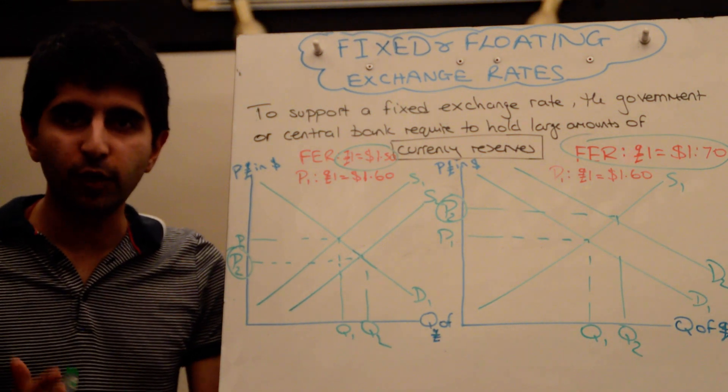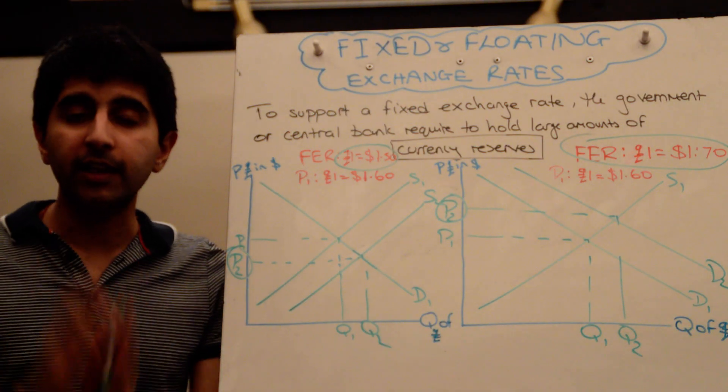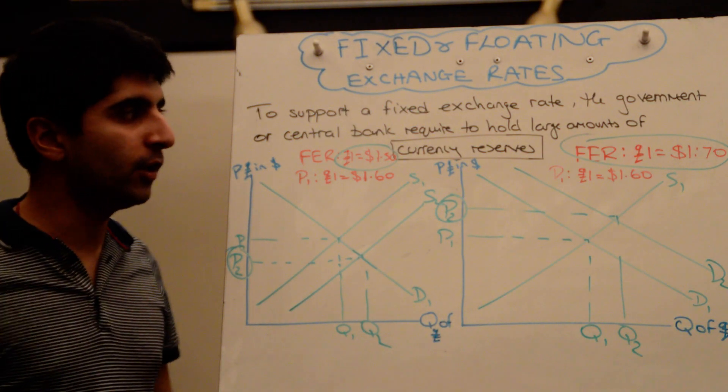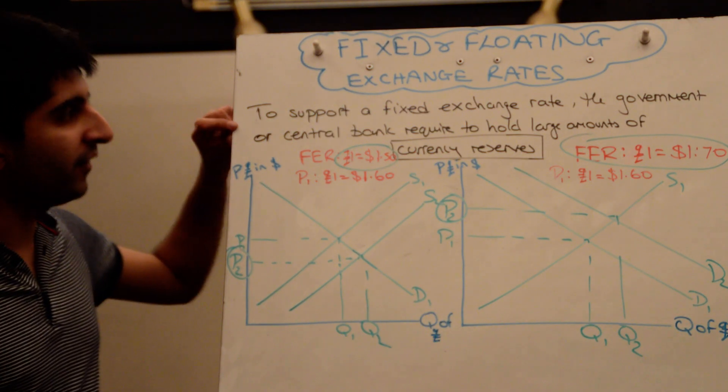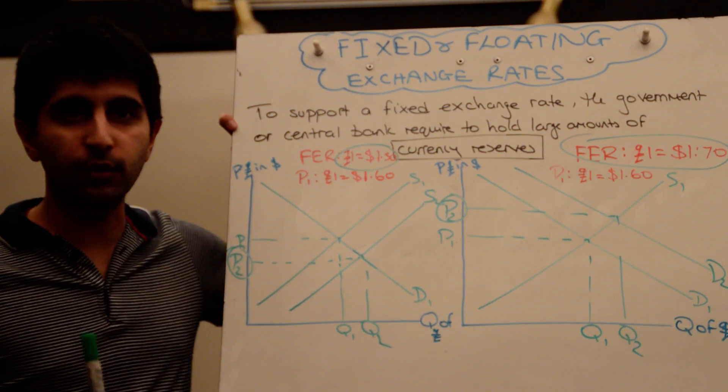All right, so that's the key difference between a fixed and a floating exchange rate. In a fixed exchange rate, government intervention is necessary to keep the fixed value. In a floating exchange rate, no government intervention at all. The key thing for a fixed exchange rate to work is to have lots of currency reserves.